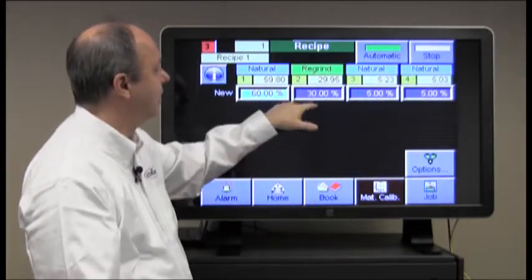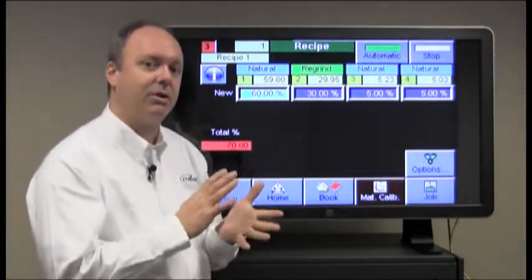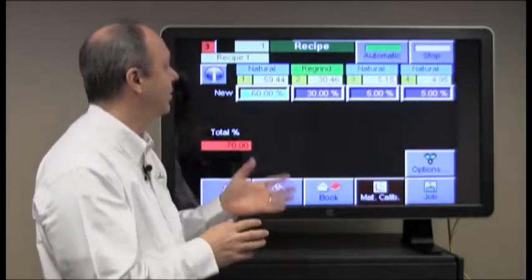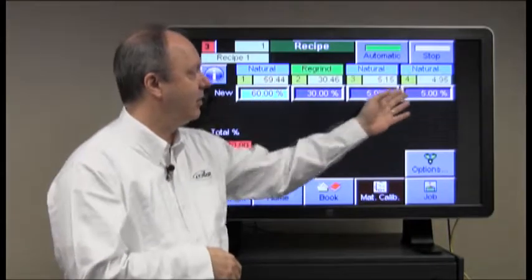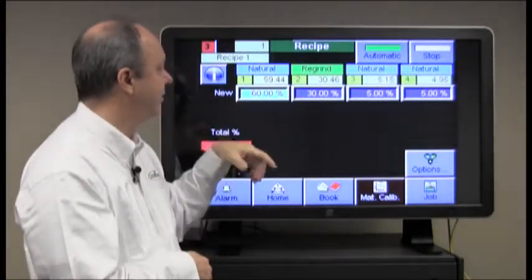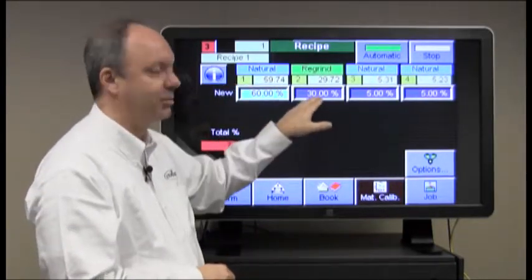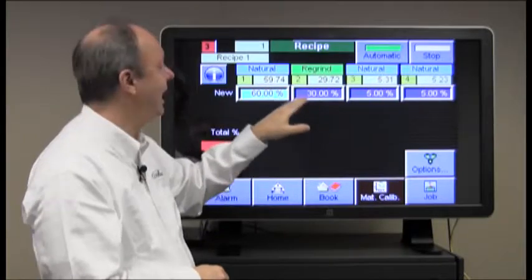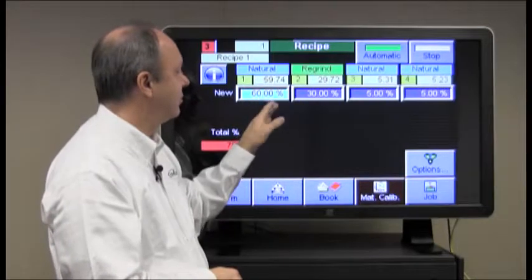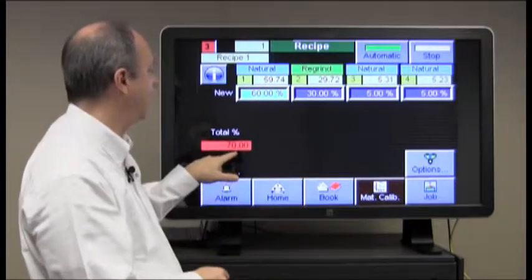So what we're trying to execute here is that a batch that we create, 30% of the batch will be regrind, which in this example, the regrind already contains all of the components of the blend. In other words, it already has the natural that's here, and it has the two additives contained within it. So we only want to add these other ingredients based on the remainder of the batch, which will be 70% of the batch size. 30% of the batch size is going to be regrind. It already contains the sum of these three components, so we need to just add in these amounts for the remaining 70% of the batch size, which again has to add to 100.